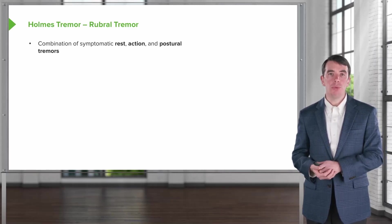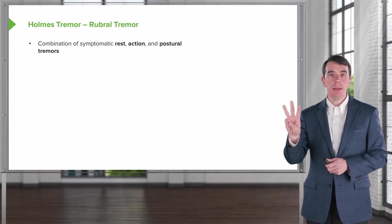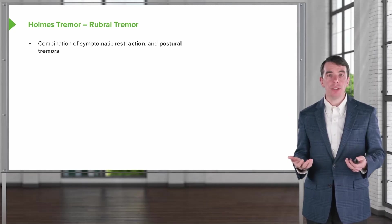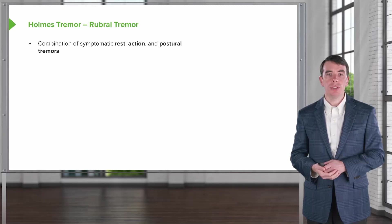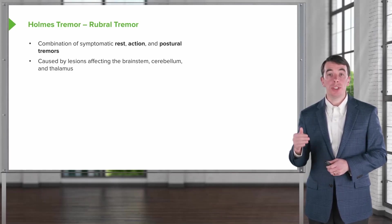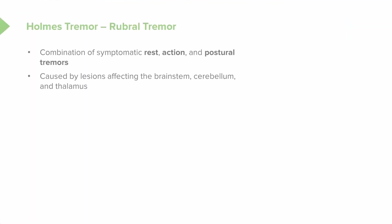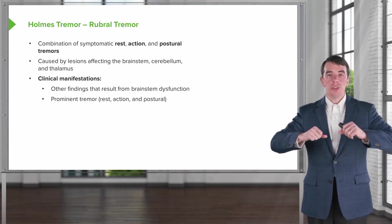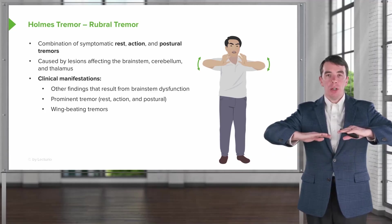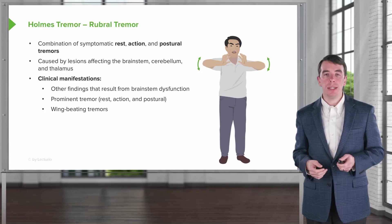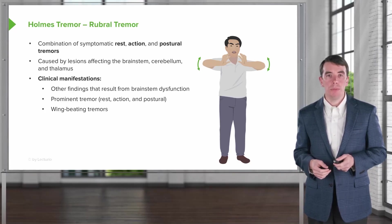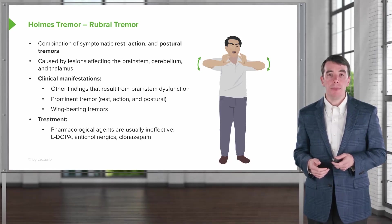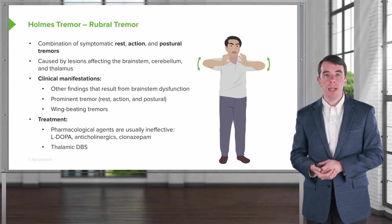The next type is Holmes tremor, also called rubral tremor. This is rare and involves a combination of rest, action, and postural tremors simultaneously, making it appear quite dramatic. It is caused by lesions affecting the brainstem, cerebellar outflow in the superior cerebellar peduncle, or thalamus. A characteristic finding is wing-beating tremor — a proximal upper extremity tremor seen with arms outstretched and bent at the elbows. Pharmacologic treatment with levodopa, anticholinergics, or clonazepam is often initiated but can be ineffective; thalamic deep brain stimulation has also been performed.